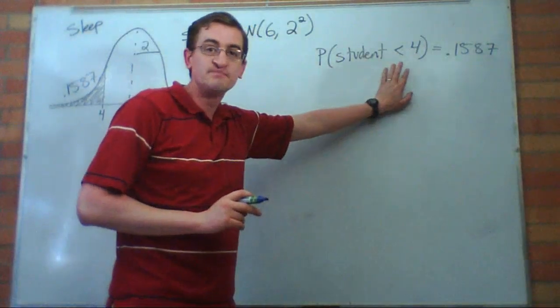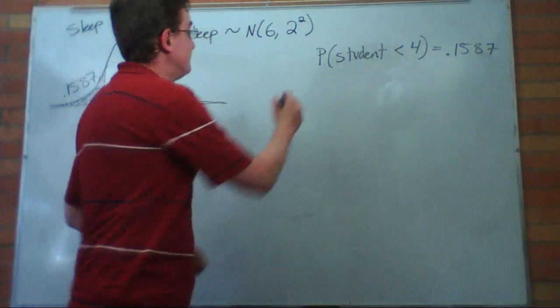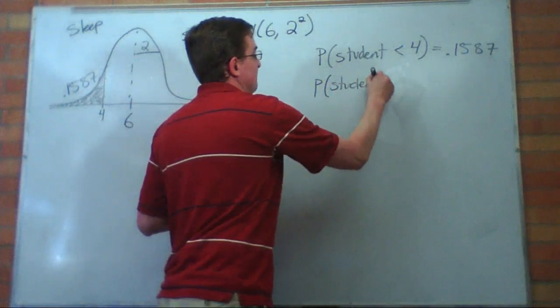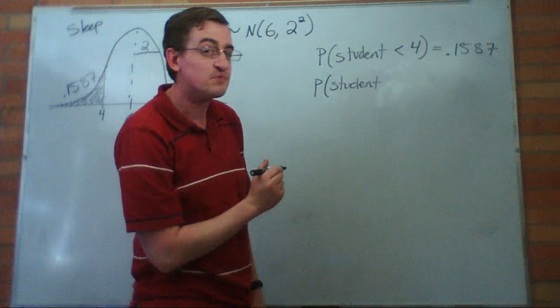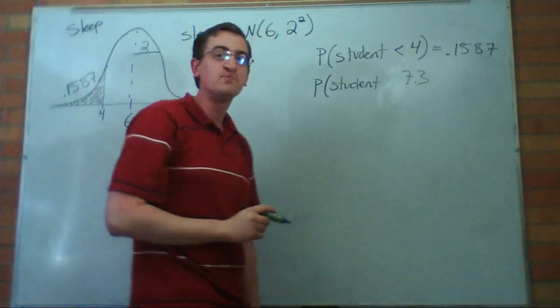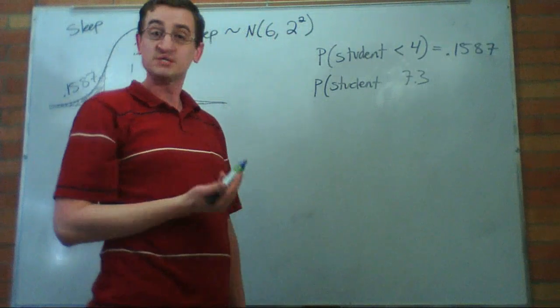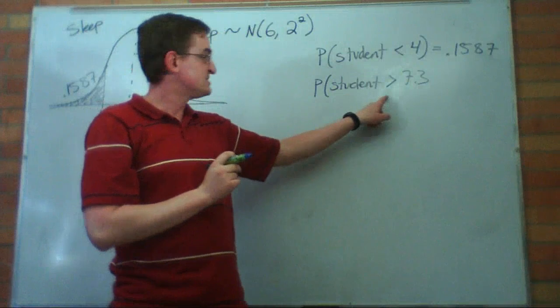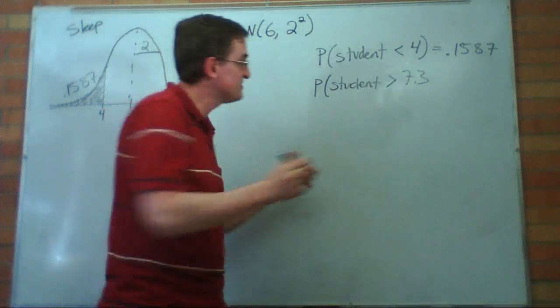We've done the probability that a student sleeps less than four hours. Now last night I got 7.3 hours of sleep. You can be jealous. I want to know what percentage of the students got more sleep than I did. What's the probability that a random student gets more than 7.3 hours of sleep?